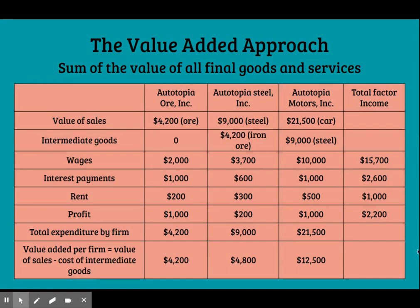Look at this calculation of GDP for the economy of Autotopia. Should we measure the GDP of this economy by adding up the total sales of the iron ore producer, the steel producer, and the auto producer? If we did, we would be counting the value of steel twice — once when it is sold by the steel plant to the auto plant, and again when the steel auto body is sold to a consumer as a finished car. And we would be counting the value of the iron ore three times: once when it is mined and sold to the steel company, a second time when it is made into steel and sold to the auto producer, and a third time when the steel is made into a car and sold to the consumer.